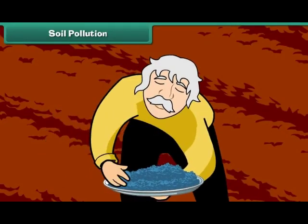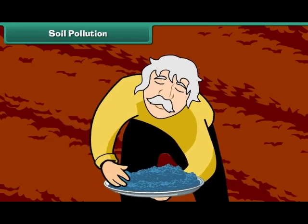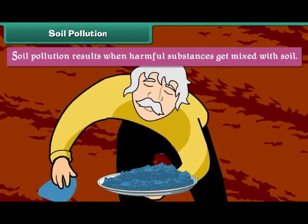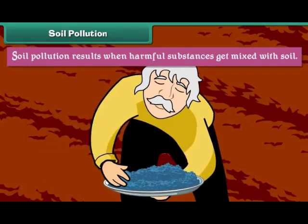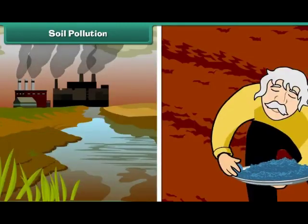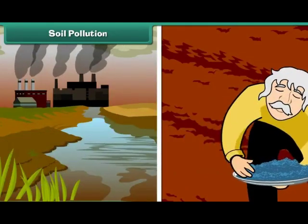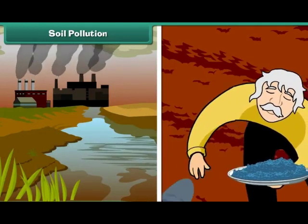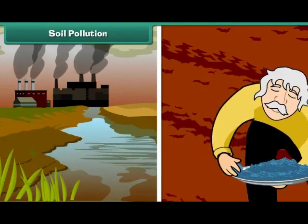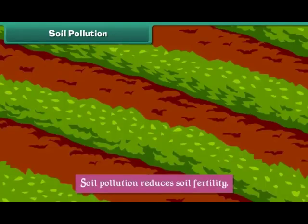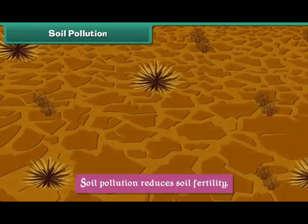Soil Pollution. Soil pollution results when harmful substances get mixed with soil. Industrial waste, fertilizers, pesticides, and insecticides pollute soil. Soil pollution reduces soil fertility.